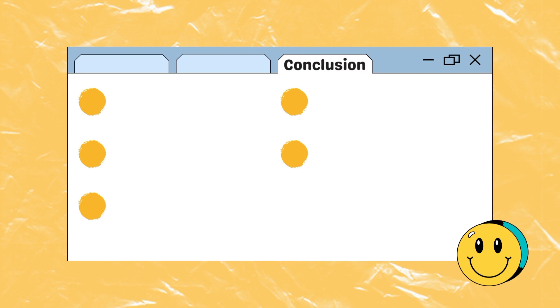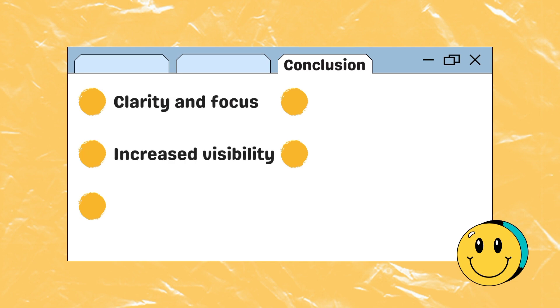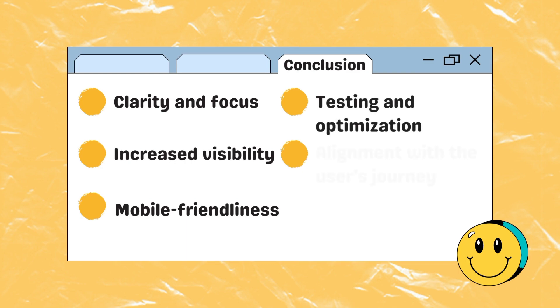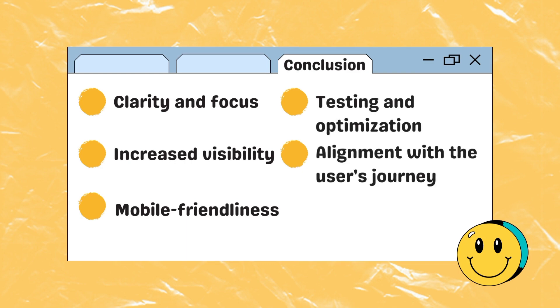In conclusion, using a well-designed CTA button in your digital marketing strategy can bring many benefits, including clarity and focus, increased visibility, mobile friendliness, testing and optimization, and alignment with the user's journey. By incorporating these best practices into your digital marketing strategy, you will be well on your way to unlocking your potential and driving conversions.